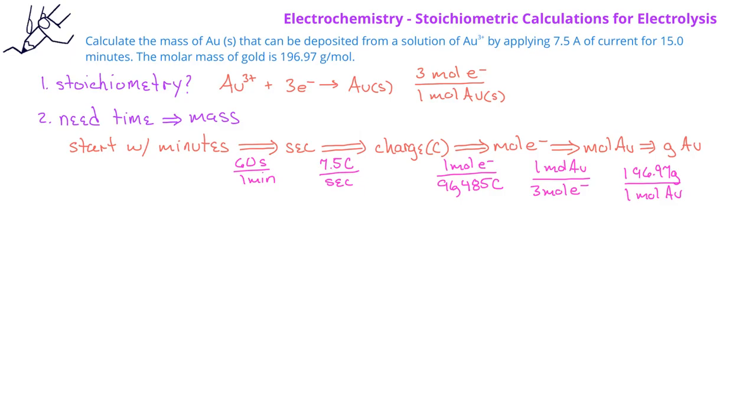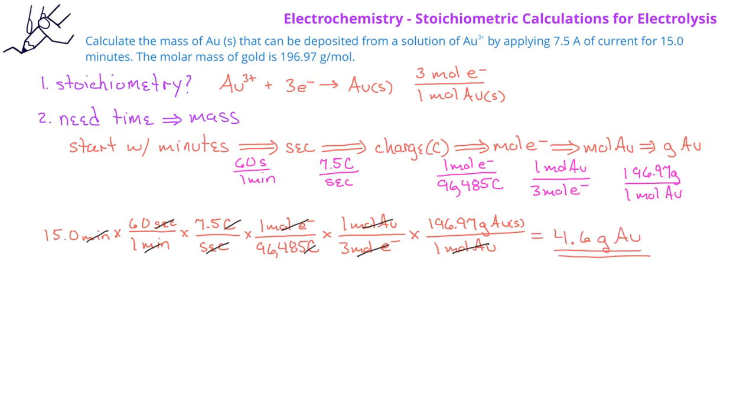When we enter these values into our calculator, we find that if we use a current of 7.5 amps for 15 minutes, we can deposit 4.6 grams of gold.